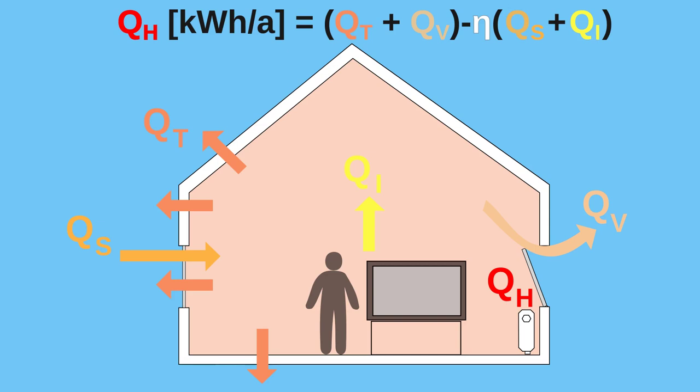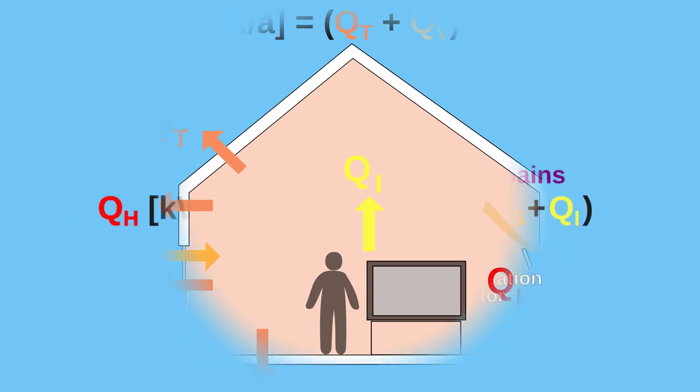Let's look at this equation more closely. On the loss side, we have transmission and ventilation, and on the other side, gains are from solar and internal sources, so-called free heat, as in you don't have to pay for these.